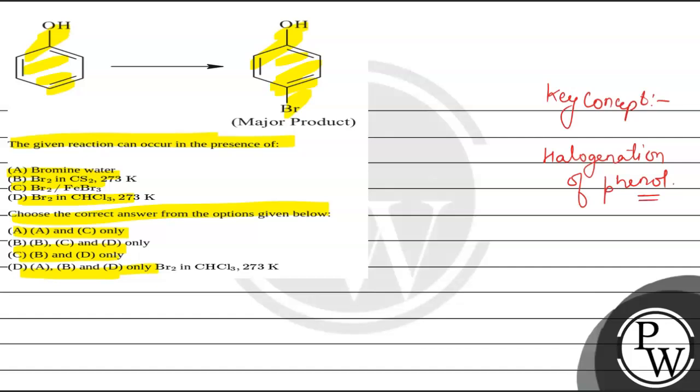So halogenation of phenol, which is what happens in that reaction is in mono stage karta hai, kai baar wo poly stage karta hai. Mono means it means that only one halogen group can be attached. Poly means more than one halogen atoms can be attached.